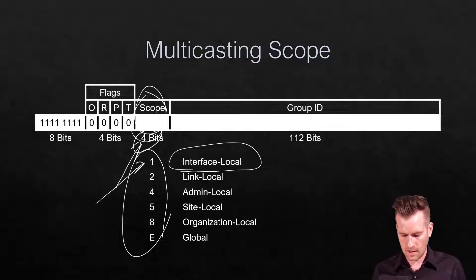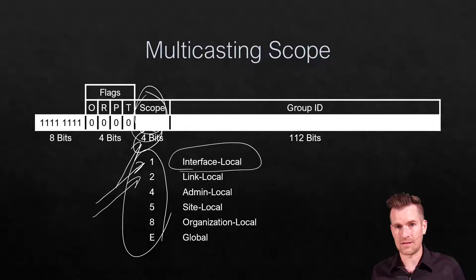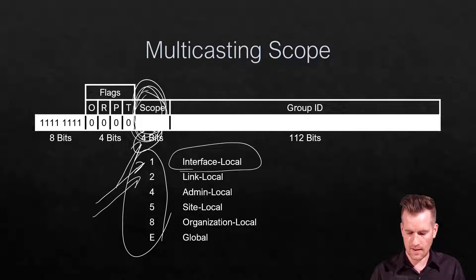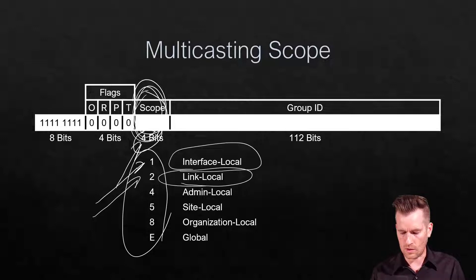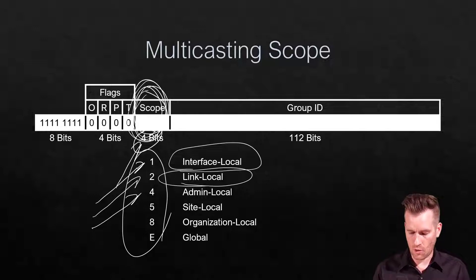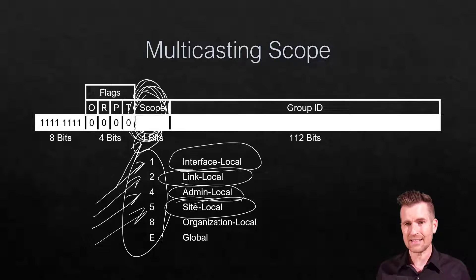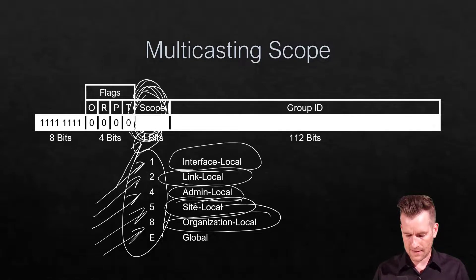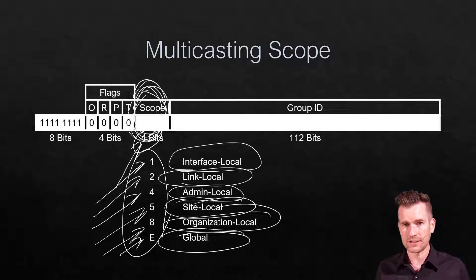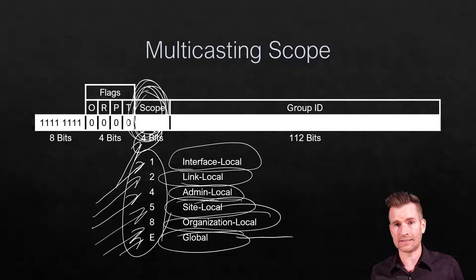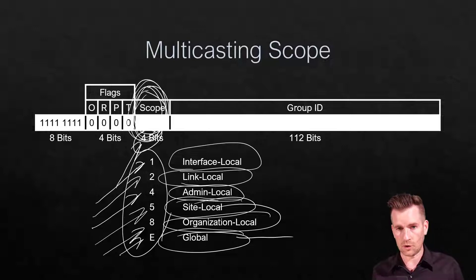If the scope value is 1, it is what's called interface local — it is only local to the machine. If it is a 2, that is a link local, and we know that link local is the local subnet. If there is a 4 in the scope, it is admin local. If there is a 5, it is site local. If there is an 8, it is organizational local. And if it is an E, that means it is a global multicast address, which means it will go out onto the internet. There are globally routable multicast addresses, and they would all start with E within the scope.